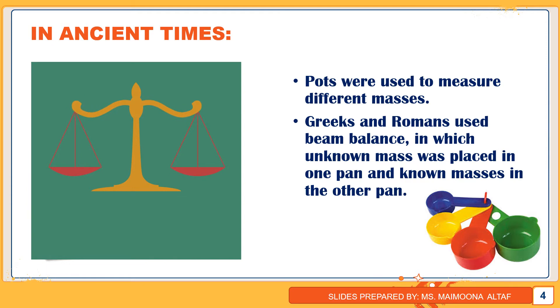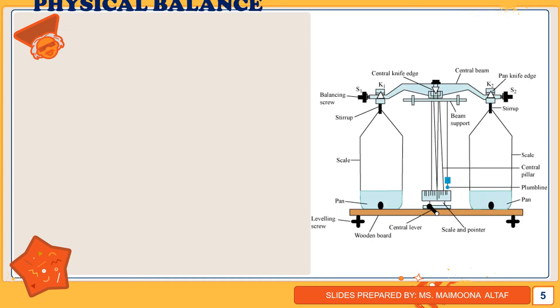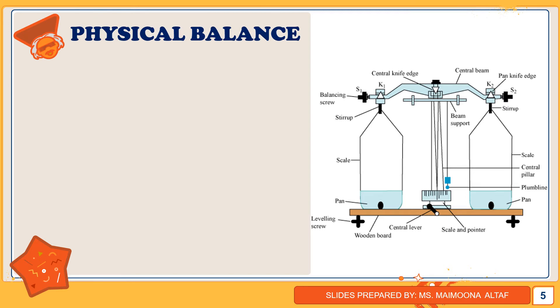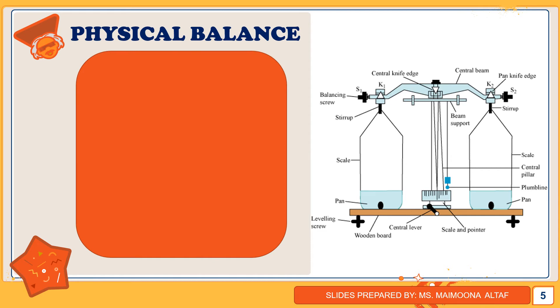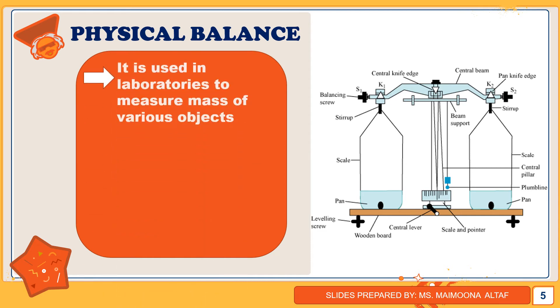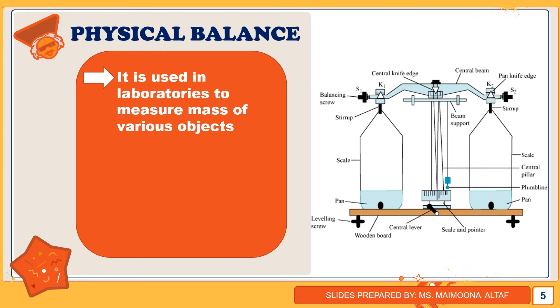In addition to this, there are different types of balances we can use to measure mass. First of all, we will discuss the physical balance. Physical balance is used in laboratories to measure the mass of various objects by comparison. Comparison means that we use known standard masses to measure the unknown objects.